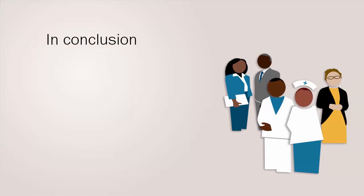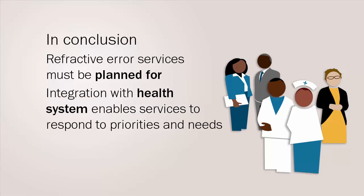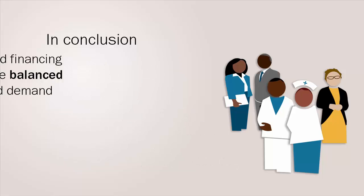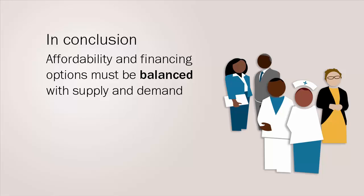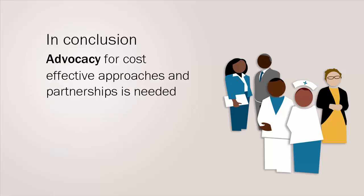In conclusion, refractive error services must be planned for to improve access and coverage, particularly for children. Integration of services into the health system enables them to respond to priorities and needs. Quality of service provision must be managed by strengthening policy and safety standards. Affordability and financing options must be balanced with supply and demand. Management systems to monitor and respond to issues are essential to increase service delivery outputs. Advocacy for cost-effective approaches and partnerships at government level and with public-private consortia is needed to address the burden of uncorrected refractive error.